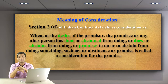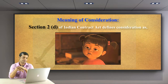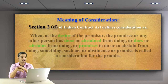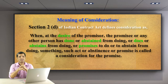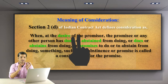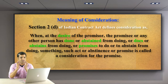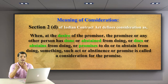Such act, abstinence, or promise is called a consideration for the promise. The definition is highly complicated, but don't worry. You need to understand two points in order to appreciate this definition. In a contract, it is not always essentially required that you are giving something and someone is taking something.